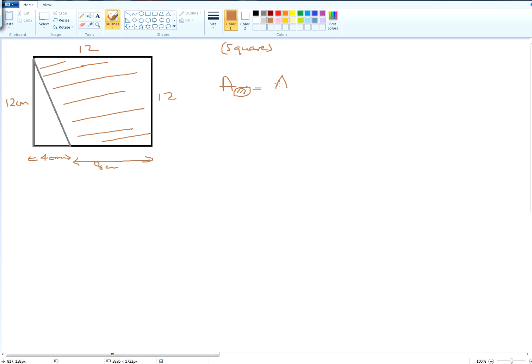So we start with the area of the square and then we minus the area of the triangle. The area of the square is 12 times 12, and the area of the triangle is 4 times 12 divided by 2.